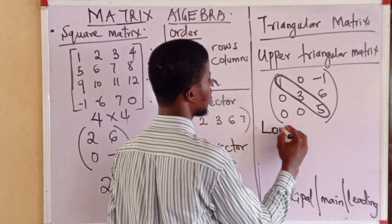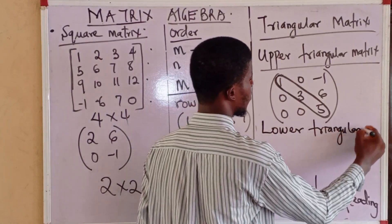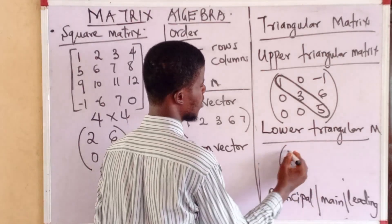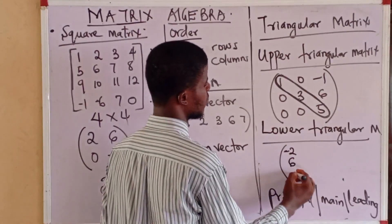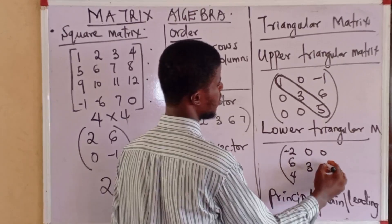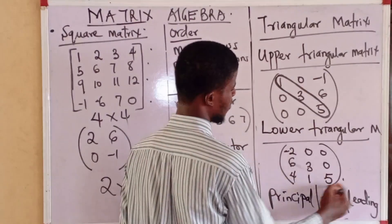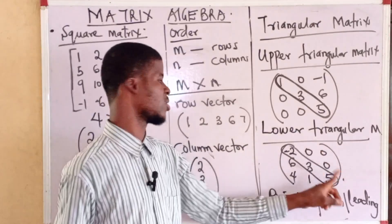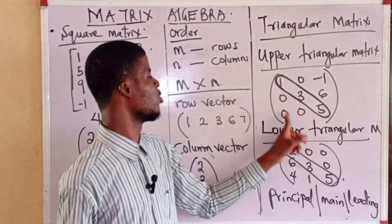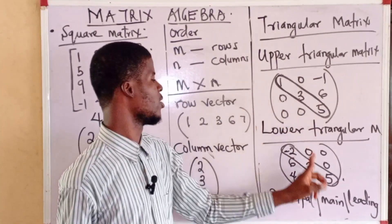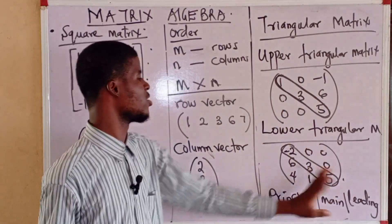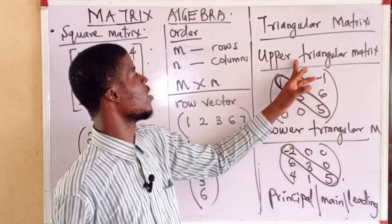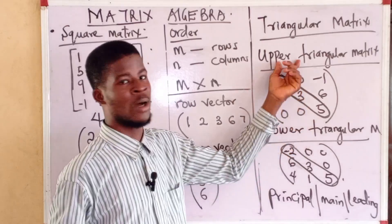For a lower triangular matrix — for example, minus 2, 6, 4, 0, 0, 3, 0, 1, 5 — it is still a square matrix. Here, all the elements above the principal diagonal are 0. When all the numbers above the principal diagonal are 0, the matrix is called a lower triangular matrix. When all the numbers below the principal diagonal are 0, it is called an upper triangular matrix.